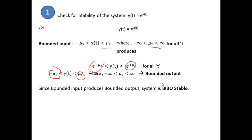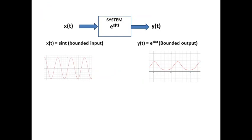To illustrate graphically: take x(t) = sin(t), which is a bounded input with finite values that never go to infinity. Then y(t) = e^(sin(t)) is the output, and at any point in time it also does not go to infinity. So bounded input produces bounded output, confirming the system is stable.